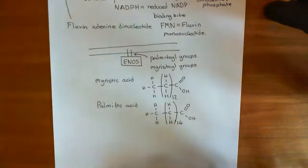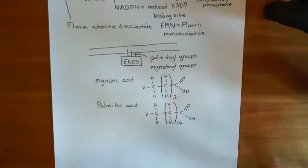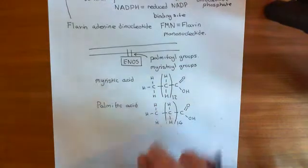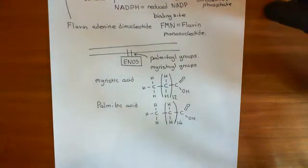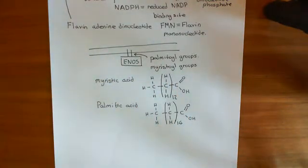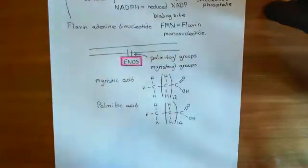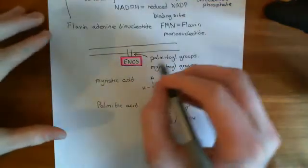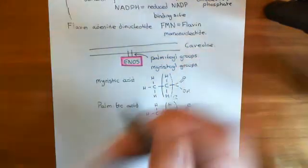Palmitic acid is a 16-carbon carboxylic acid. These palmitoyl and myristoyl groups are stuck onto the side chains of the eNOS protein near its amino terminus, giving it long-chain hydrophobic carboxylic acid tails. These tails can implant into the phospholipid bilayer, meaning that the eNOS protein is tethered at the plasma membrane. It localizes specifically in caveolae and binds to the protein caveolin-1.